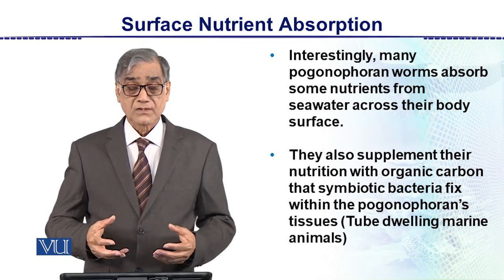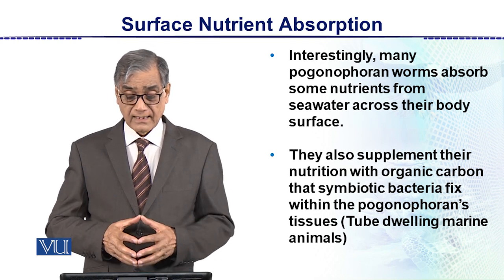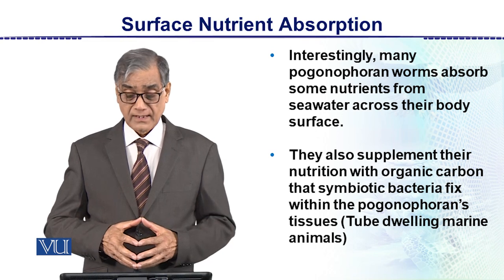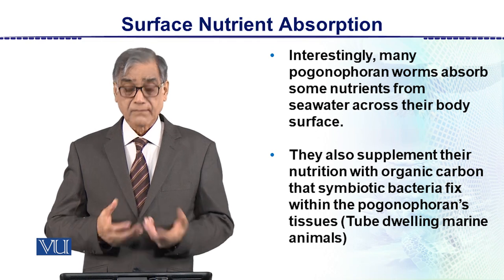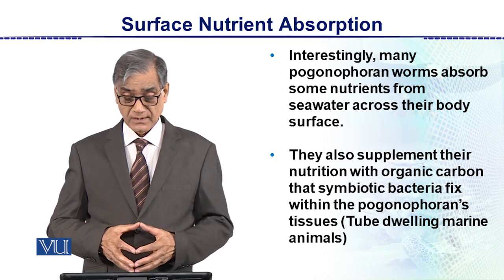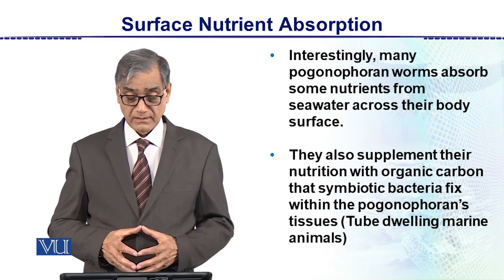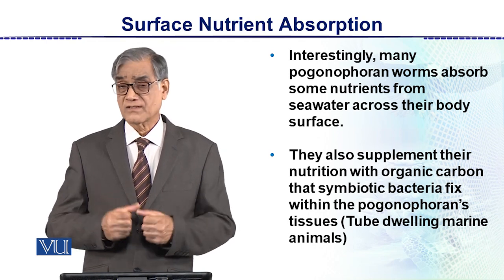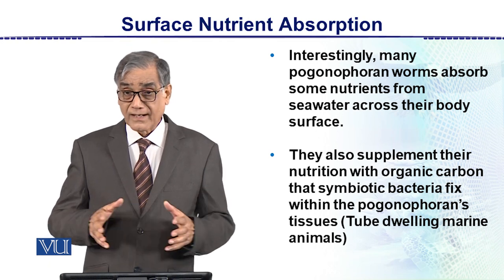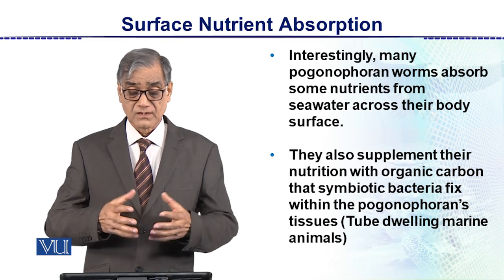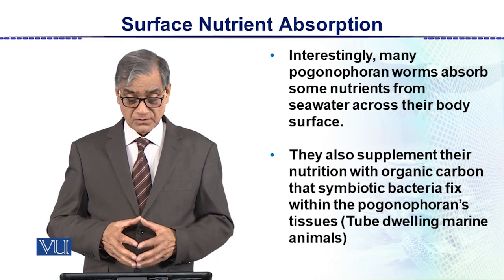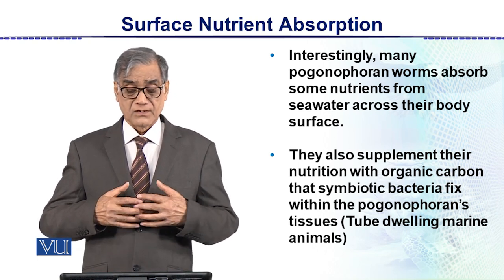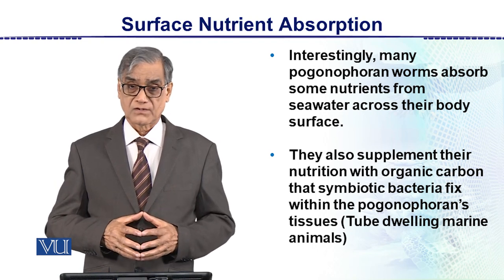Many pogonoforan worms absorb some nutrients from seawater across their body surface. They also supplement their nutrition with organic carbon that symbiotic bacteria fix within the pogonoforans. These marine animals harbor certain bacteria which fix nitrites, and these are then supplied to the host organism — the surface nutrient absorber.